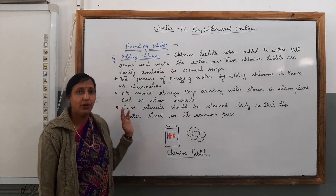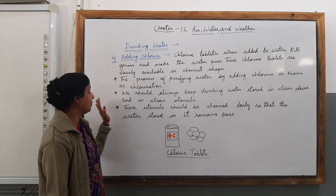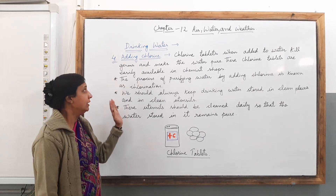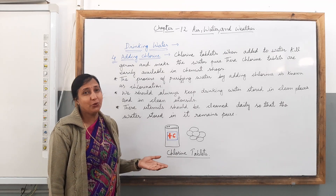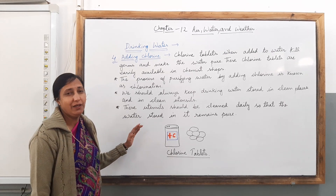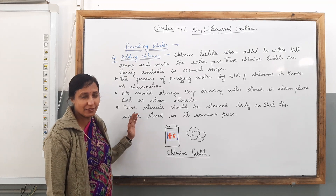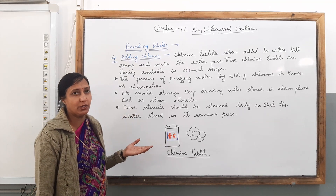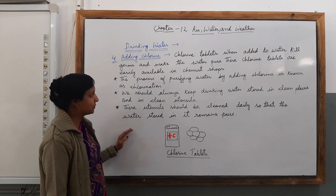In today's class, we are going to learn the fourth way to make water clean. That is a very simple method — that is adding chlorine. So you must be thinking how can water be clean after adding chlorine. Let us learn the process of adding chlorine and making water suitable for use.